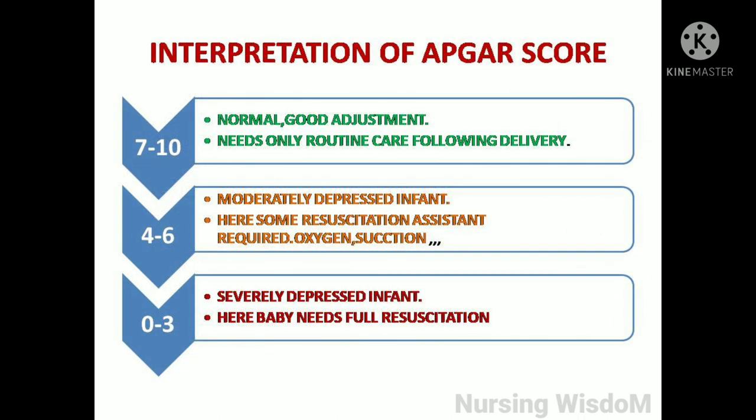Interpretation of the APGAR score: the score ranges from 0 to 10. A score of 7 to 10 indicates a normal infant with good adjustment — no intervention is required and the baby needs only routine care following delivery. A score of 4 to 6 indicates a moderately depressed infant, where some resuscitation assistance is required, such as oxygen, suction, and other types of support.